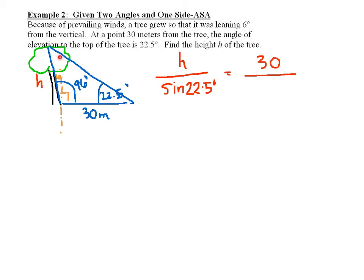We need to know what this angle is up here. We'll call that angle T for the tree. To find angle T, we just take 180 and subtract 96 plus 22.5, and you find that angle T is 61.5 degrees.